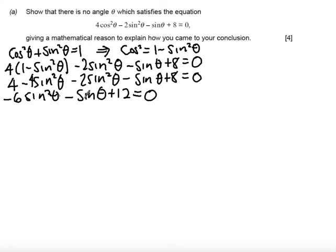To make life easier for myself I want a positive quadratic term here so I'm just going to multiply everything by -1. So I get 6sin²θ + sinθ - 12 = 0. Just adjusting that last term.